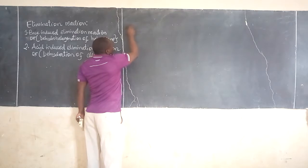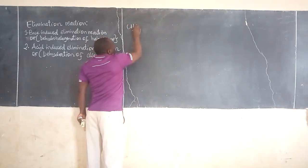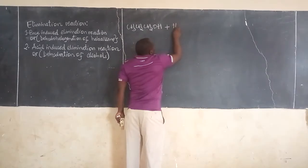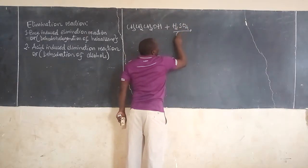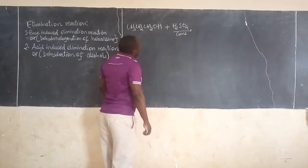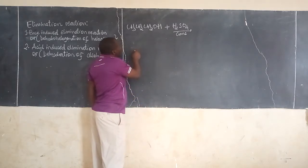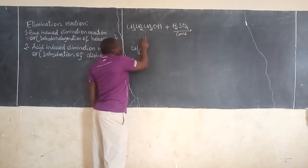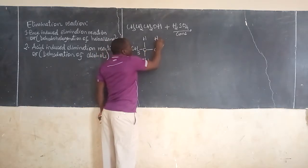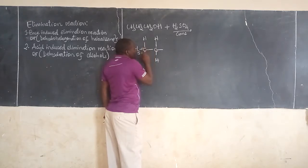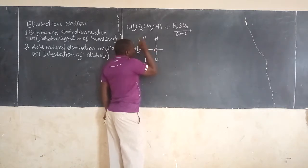Let's now look at the first example. Let me take propanol. Propanol is going to react with concentrated sulfuric acid. Before dealing with this, first of all, as we saw in dehydrohalogenation of alkyl halide, the most important point is to arrange and identify which are the alpha hydrogens and which are the beta hydrogens, and also identify which are the alpha carbon and which is the beta carbon.